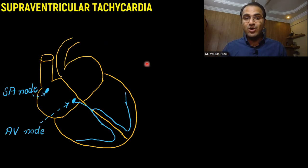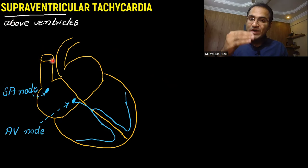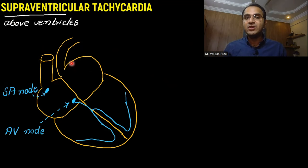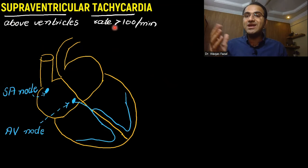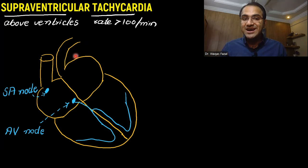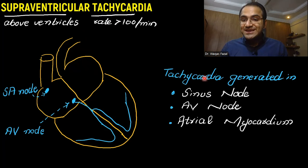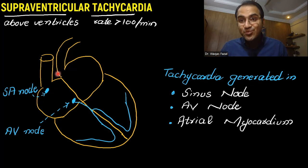What is supraventricular tachycardia? Supraventricular means above the ventricles — above the ventricles means the origin is from the atria. Supraventricular tachycardia means a rate greater than 100 beats per minute. So there is tachycardia, and the origin of that tachycardia is above the ventricles, in the atria.